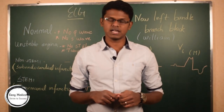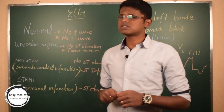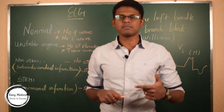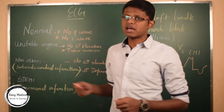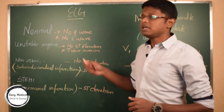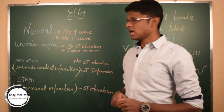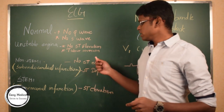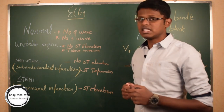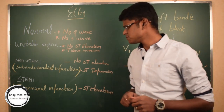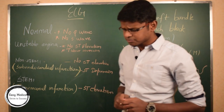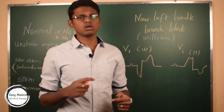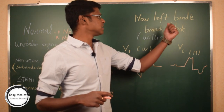Now let's discuss ECG in more detail. A normal ECG doesn't have any pathological Q-wave. If there is presence of a Q-wave, it might indicate a pathological condition. In unstable angina, there will be no ST-segment elevation, but there will be T-wave inversion. In non-STEMI, it is characteristic of sub-endocardial infarction, which shows no ST elevation and shows ST depression on ECG. In STEMI, it is a transmural infarction which shows ST elevation. The key differentiating feature between non-STEMI and STEMI is the new left bundle branch block.